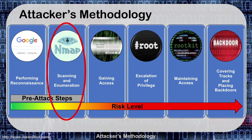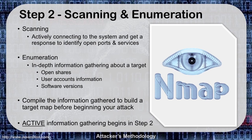When we go into phase two, we get into scanning and enumeration. This is another pre-attack step where we're trying to gather more information. I've done everything I can in the open source world and now I'm going to move into actual scanning — this is when I first actively connect to the system to identify open ports and services. On the right side of the screen I have Nmap listed. It is by far one of the most common scanning tools used. If you are going to sit for the Certified Ethical Hacker exam, you have to understand how to use Nmap and know the command line usage.